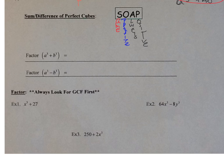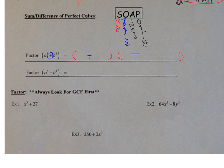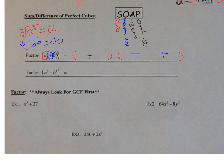When factoring the sum of perfect cubes, a cubed plus b cubed, set up two parentheses — the second one bigger. Using SOAP: the first sign is the same as plus (positive), the next sign is opposite (minus), and the last sign is always positive. Take the cube root of each term: cube root of a cubed is a, cube root of b cubed is b. In the small parentheses put a and b. In the large parentheses: the front is a squared, the middle is a times b, and the end is b squared.